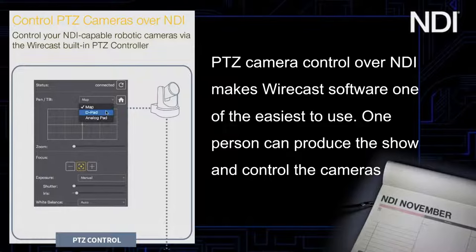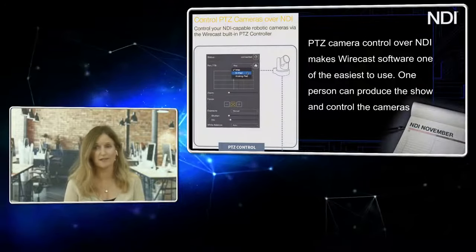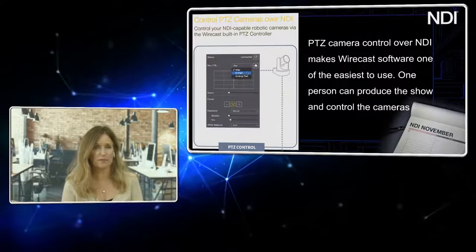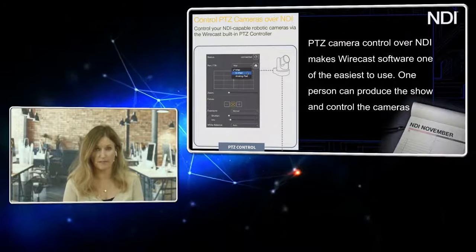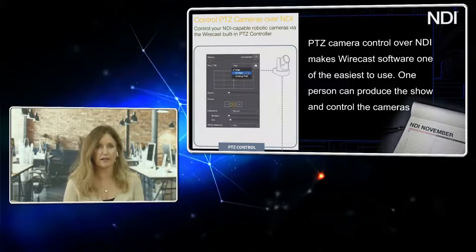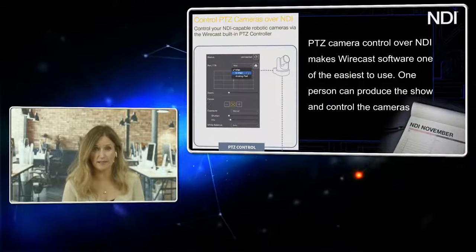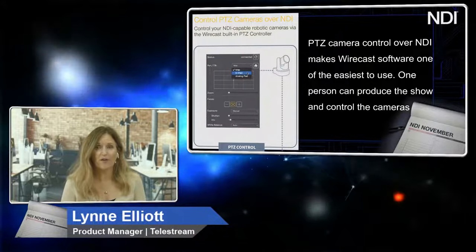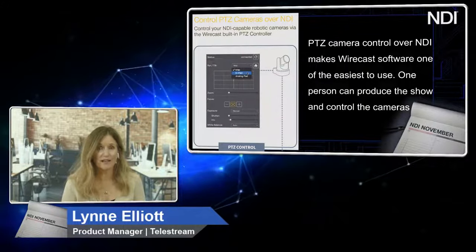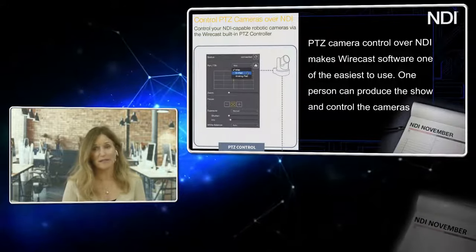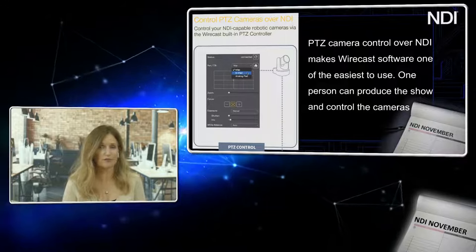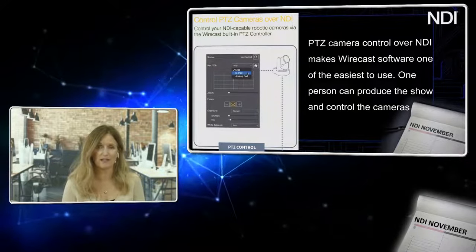Yeah, so we have in Wirecast the capability to control pan, zoom and tilt PTZ cameras. We have built in VISCA over IP control for some specific cameras, including some Lumens and PTZ Optics cameras and one Beyond cameras. But beyond that, we have also implemented NDI protocols. So any NDI PTZ camera that comes in, you can connect to and control — pan it left to right, zoom it in and out using the NDI protocol.